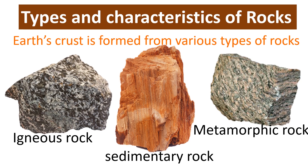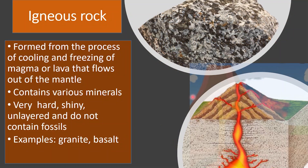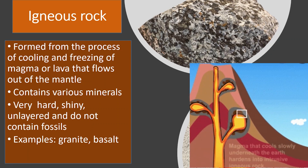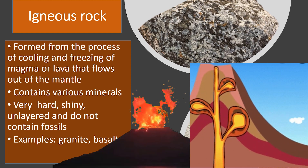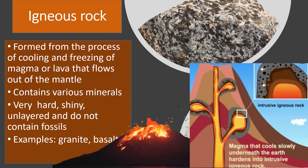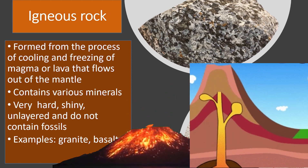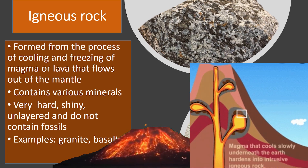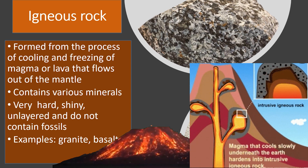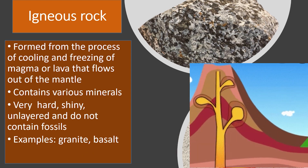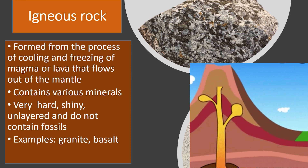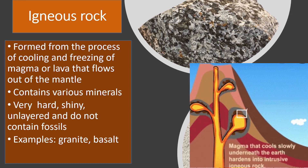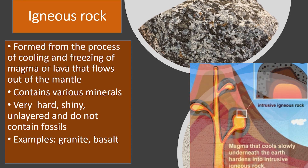All rocks contain materials known as minerals. Igneous rock is formed from the process of cooling and freezing of magma or lava that flows out of the mantle. Igneous rock contains various minerals. Igneous rock is very hard, shiny, unlayered and does not contain fossils. Examples of igneous rock are granite and basalt.